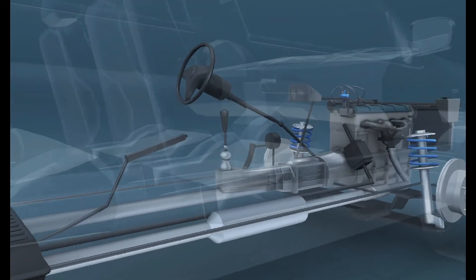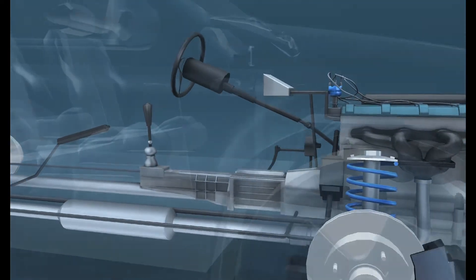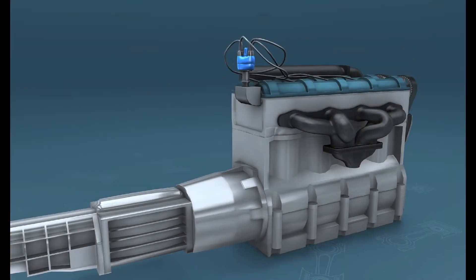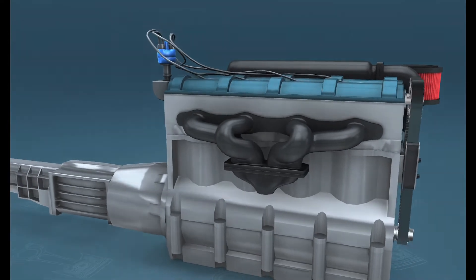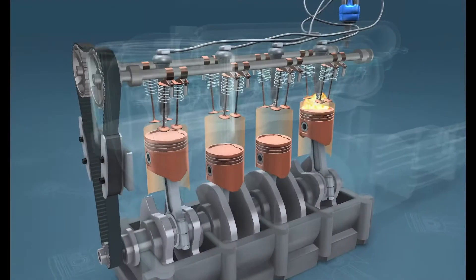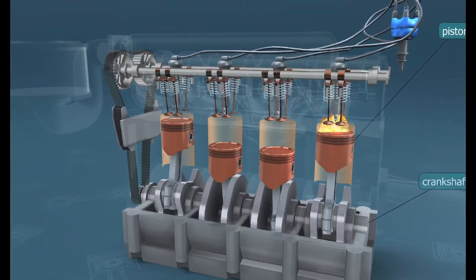Most engine management systems commonly found in automobiles today have a knock sensor that monitors if knock is being produced by the fuel being used. In modern computer controlled engines, the ignition timing will be automatically altered by the engine's management system to reduce the knock to an acceptable level.